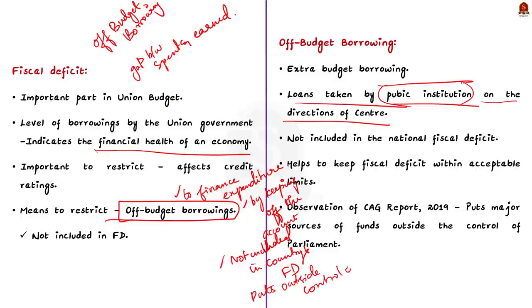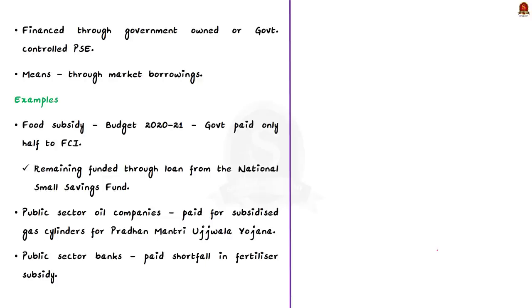Now, let us see how these off-budget borrowings are raised or finances are raised. The government expenditure here is financed through market borrowings on behalf of the government by the government-owned or government-controlled public sector enterprises. That is, the government can ask any implementing agency to raise the required funds from the market through loans or by issuing bond.